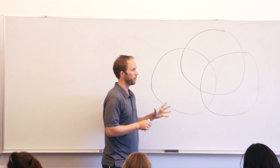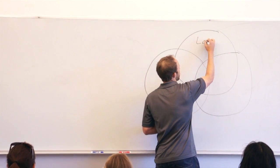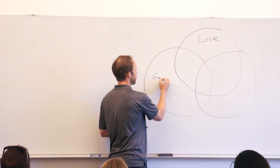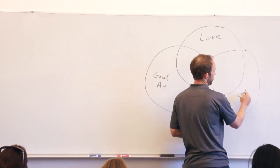And it is, well, one circle is things that you love, and one circle is things that you're good at, and one circle is things that you can get paid for.